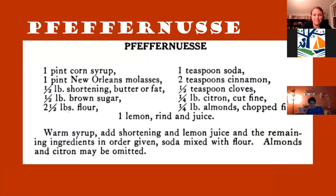Pfeffernüsse — I love this recipe because it's so American: it's got corn syrup and New Orleans molasses, and then the flavoring is cinnamon and cloves, and again with the citron and the almonds and lemon. That seems to be the theme in German cooking, although this one says that almonds and citron may be omitted, I guess if you can't find or afford them.